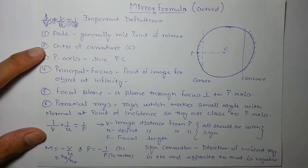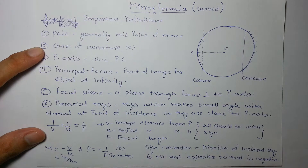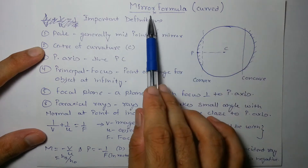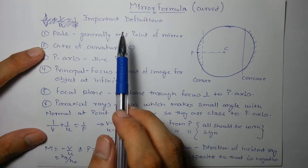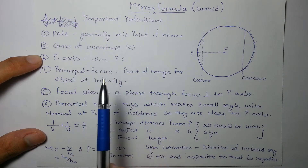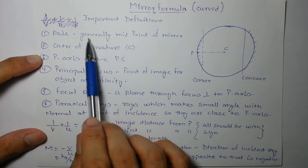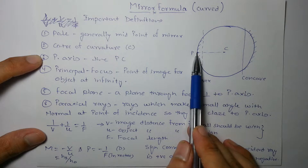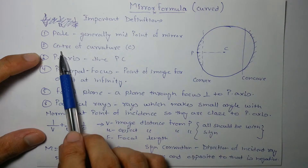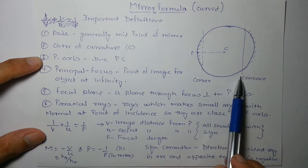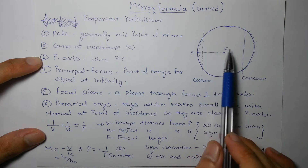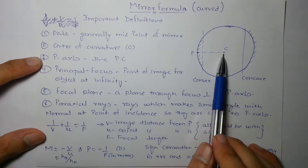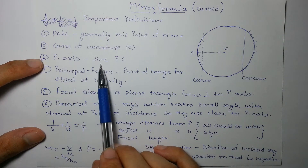In this video, we'll study mirror formula and mirrors, especially curved mirrors. Plain mirrors can be considered a special case of curved mirrors. Important definitions: Pole is generally the midpoint of the mirror. Center of curvature — since spherical mirrors are part of a sphere, the center of that sphere is known as the center of curvature.